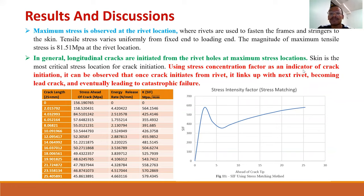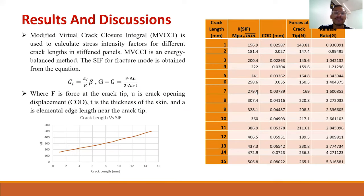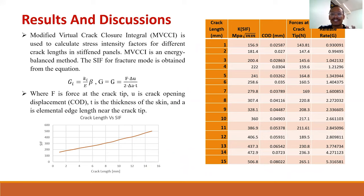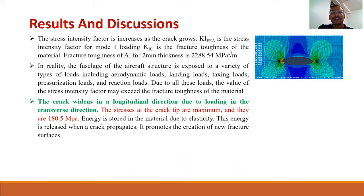The graph of stress intensity factor versus distance ahead of the crack tip is plotted, and in another graph using the modified virtual crack closure integral, the graph of crack length versus stress intensity factor is plotted. Both graphs show the same trend: the stress intensity factor increases with crack length and also with the strain energy release rate. The fracture toughness of aluminum for 2 mm thickness is 22808.54 MPa.